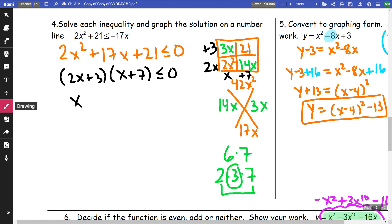So then I'm going to have x is equal to a negative 3 halves, and x is equal to a negative 7. Those are going to be my boundary points. So negative 7 would be here. Negative 3 halves would be on this side.